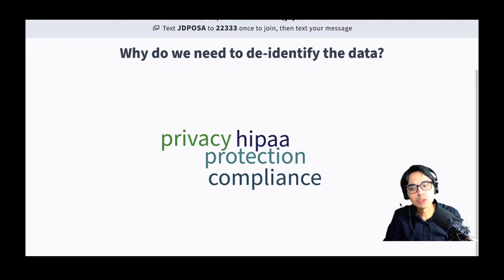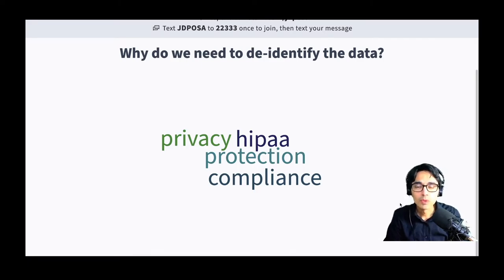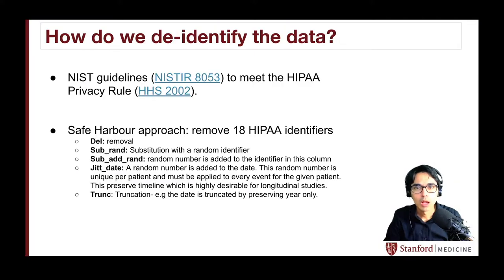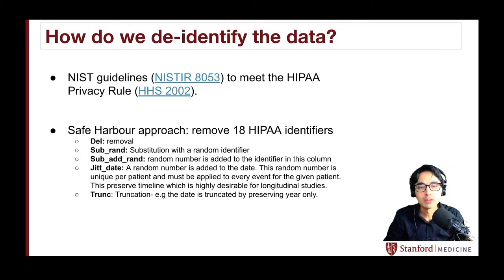The question is: why do we need to de-identify clinical notes or de-identify the data? We need to do this because we need to protect patient privacy. Patients have entrusted us their information while we take care of them in our facilities, and we need to ensure that patient privacy is protected. We follow two guidelines: the NIST guidelines and the HIPAA privacy rule. With those two guidelines, we decided to take the safe harbor method, which tells us that we should remove 18 identifiers.